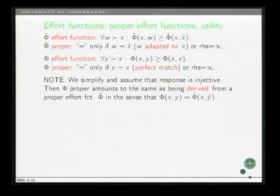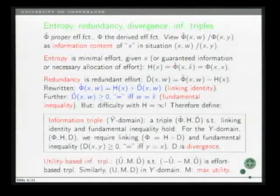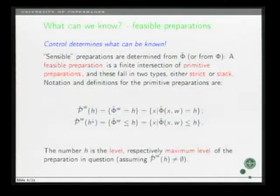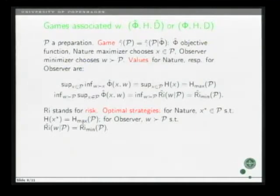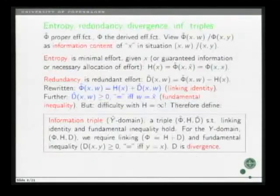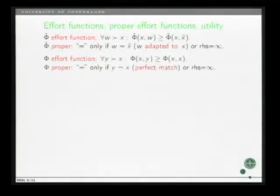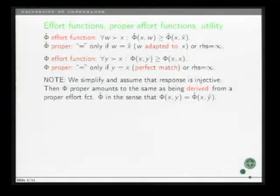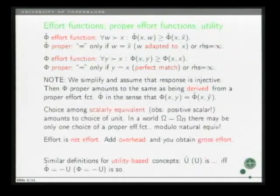Okay, then technically here, I assume that response is an injective function, then the proper phi function in the Y domain is the same as one being derived from a proper one in the Y hat domain, being derived in the sense that phi x, Y is... What's so not in it? Perhaps I shouldn't use the pointer.